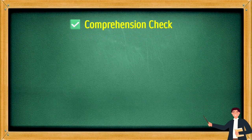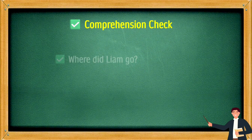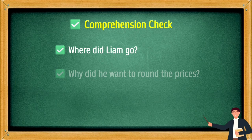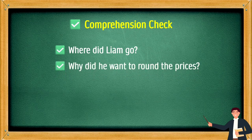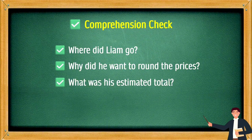Comprehension check. Where did Liam go? Why did he want to round the prices? What was his estimated total?